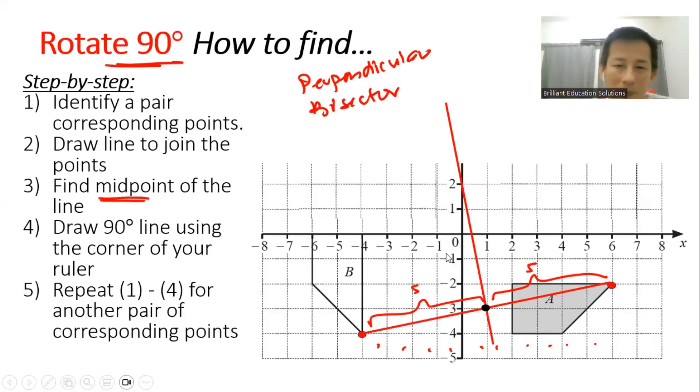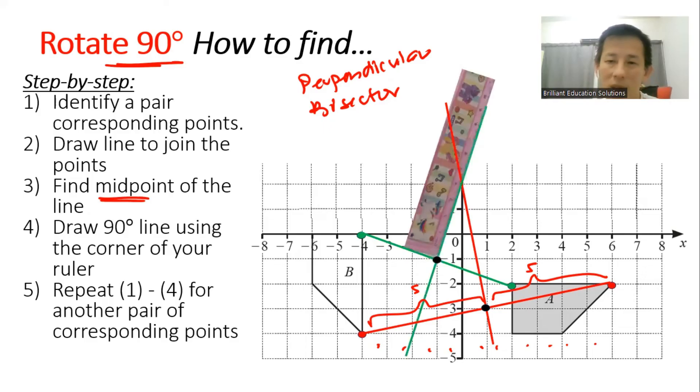You repeat the same step for another point. Put your ruler and draw the line. You should get two perpendicular bisectors.